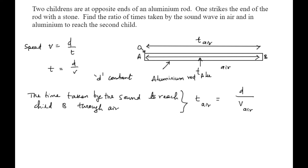V_air is the velocity of sound in air. I know the velocity of sound in air is equal to 340 metres per second. So T_air equals D divided by 340. I will mark this as equation number 1.